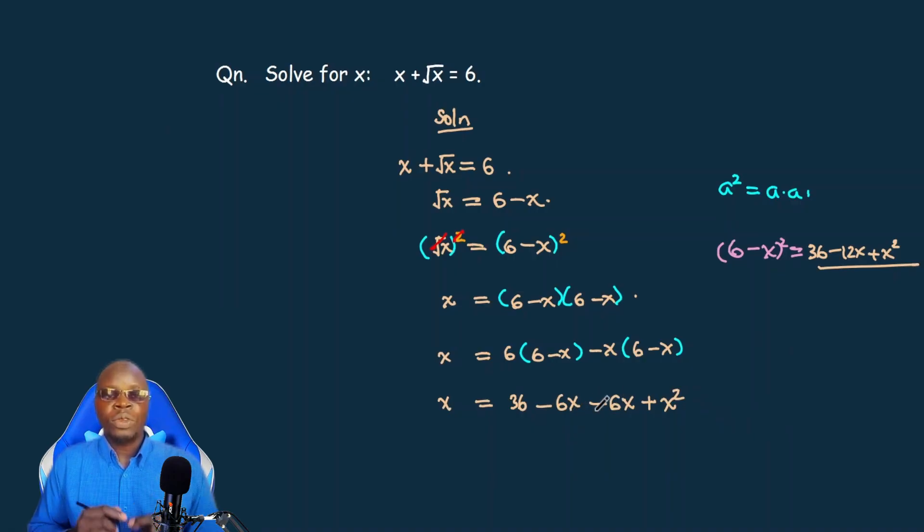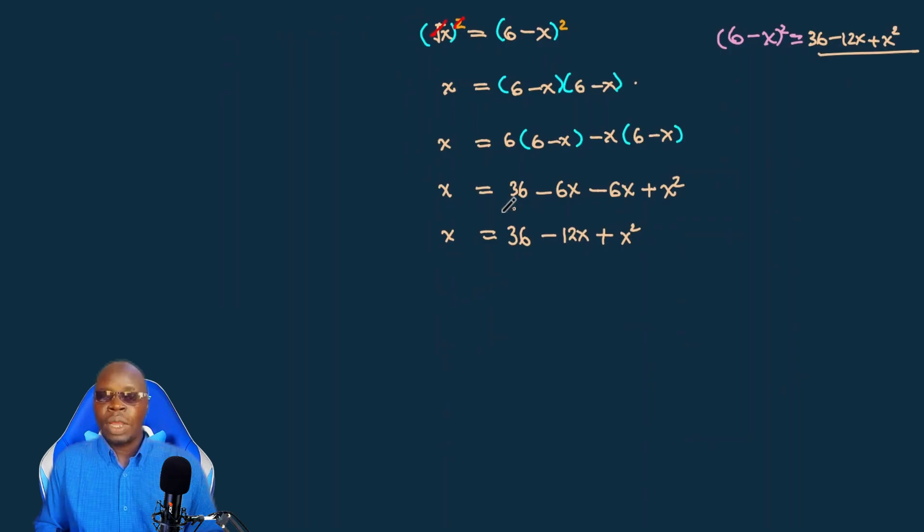Then negative times negative goes to positive, x times x we get x squared. Now when you get numbers with the same sign what you do is to add them together and maintain the sign. So negative and negative add themselves, so we have 6 and 6 adding to 12, minus 12x and plus our x squared.